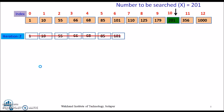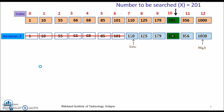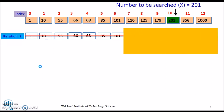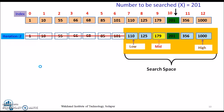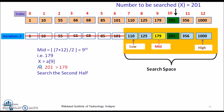For the second iteration, the first half is discarded and the elements after 101 are taken into consideration. The new low is at index 7 and high is at index 12. We calculate the mid — the mid here is 179. Since 201 is greater than 179, we once again divide the array into 2 halves and consider the subarray after element 179.